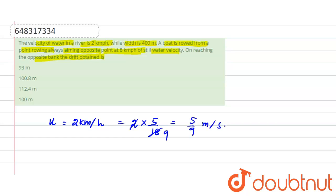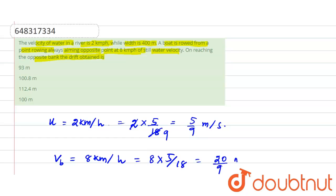The velocity of the boat is 8 kilometers per hour, which equals vb. Converting into meters per second: 8 × 5/18 = 40/18 = 20/9 meters per second.